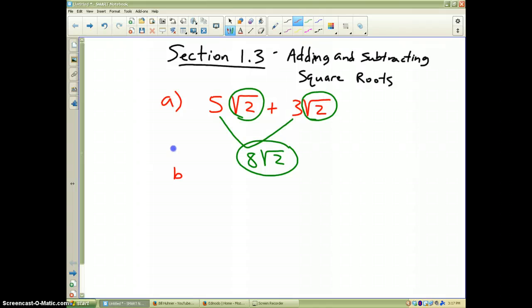Now let's look at a problem that involves a little bit more complication. Let's say we have 5 square roots of 3 minus the square root of 12. Now before you say that this can't be done, you need to do a little checking.